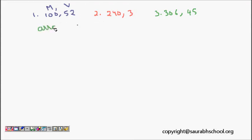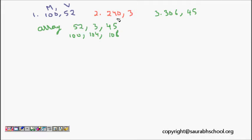If it were just an array, we would consider only the values — 52, 3, and 45 — because if it starts at 100, the next would be at 104 and then 108, since an integer is four bytes. But now these are not contiguous; each element is stored at whatever available memory location. So what I need to do is capture both the value and the memory location of the next element, so that after reading the first element's value I can go to the next element.